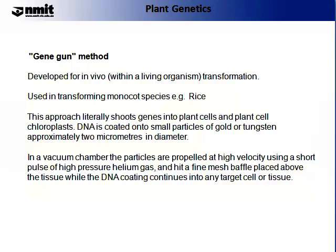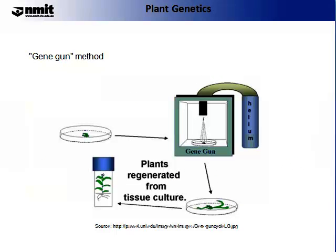DNA is coated onto small particles of gold or tungsten, which are approximately 2 micrometres in diameter — or very small. This occurs in a vacuum chamber. The particles are propelled at very high velocities using a shot pulse or high pressure helium gas, and hit a fine mesh baffle balanced above the tissue while the DNA coating continues into any target cell or tissue. On the figure on the screen, you'll see an illustration of the GeneGun method.